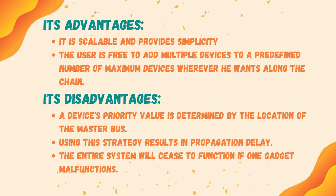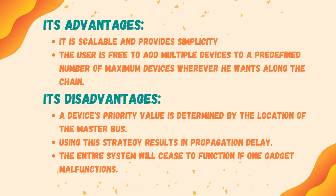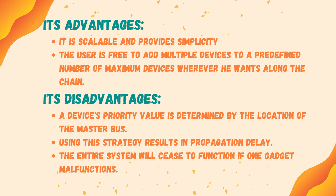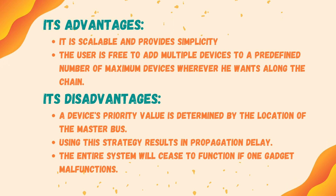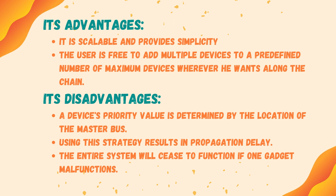Some disadvantages of daisy chaining are that a device's priority value is determined by its location relative to the bus master, the strategy results in propagation delay, and the entire system will cease to function if one device malfunctions.